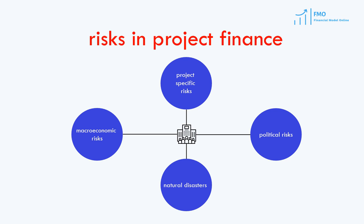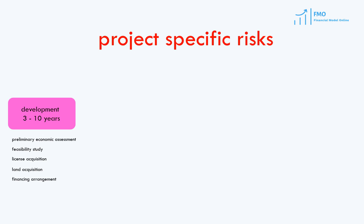Let's start with the Project Lifecycle to better understand the project-specific risks. The first stage is Project Development, when the project sponsors have to carry out technical and economic evaluations, obtain all the necessary permits, and acquire the land where the project will be built. This development stage takes anywhere from three to ten years, dependent on the country, industry, and project.